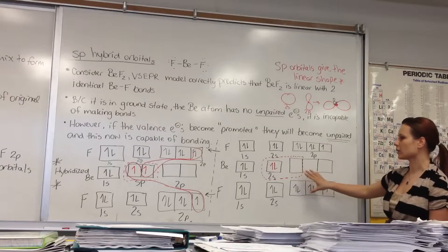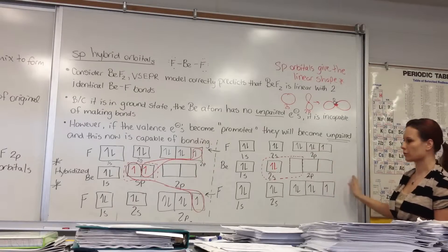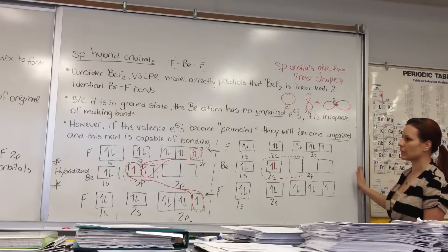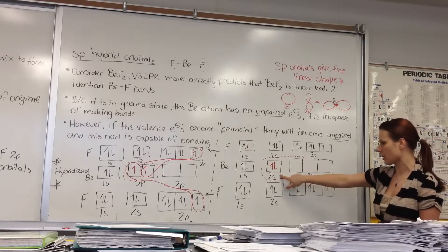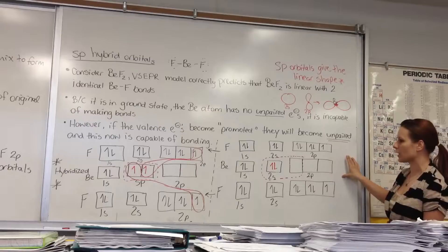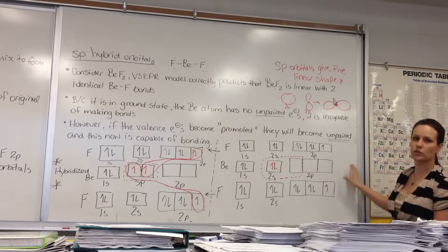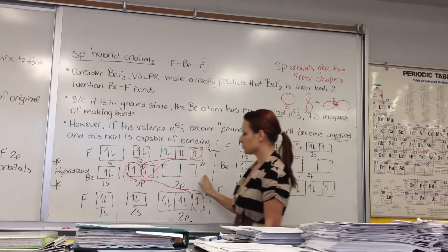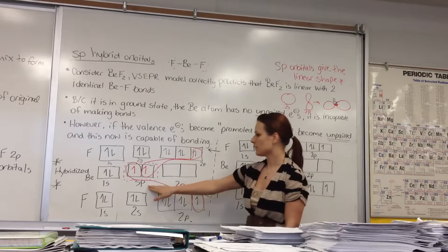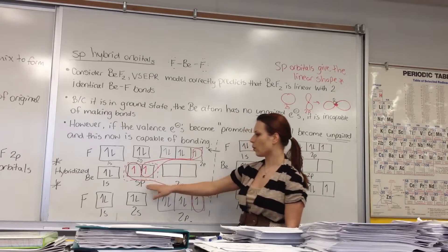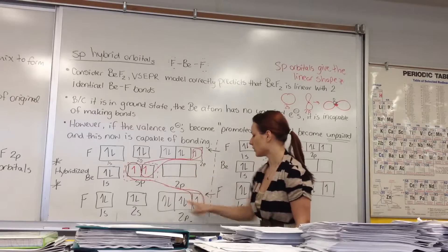The only way that bonds can actually occur is if you have unpairing, because it is the unpaired electrons that have to pair with one another for a bond to occur. In order to explain how beryllium difluoride actually forms, we have to unpair these two last valence electrons. We do that by hybridizing the central atom — and every time we hybridize, we only hybridize the central atom. We combine the 1S and 1P together to form an SP orbital. These two SP orbitals now each have one unpaired electron and can easily pair with each one of the fluorines.